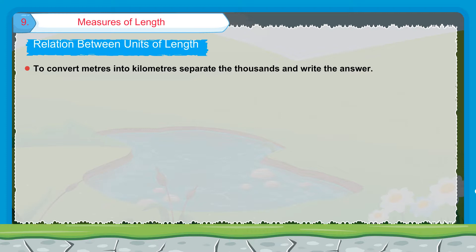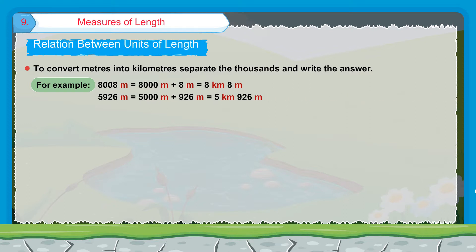To convert meters into kilometers, separate the thousands and write the answer. For example, 8008 meters = 8000 meters + 8 meters = 8 kilometers 8 meters. 5926 meters = 5 kilometers 926 meters. 4075 meters = 4000 meters + 75 meters = 4 kilometers 75 meters.